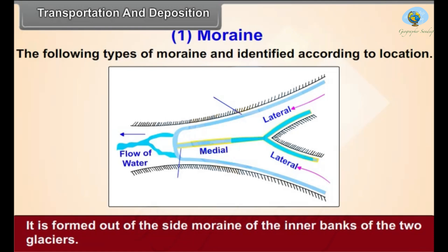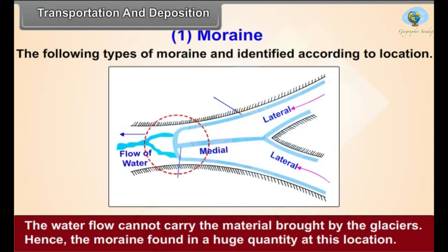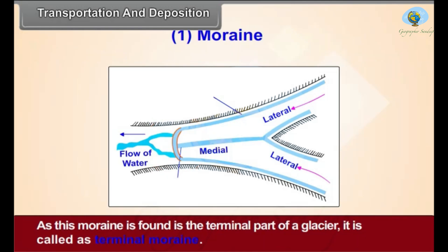Medial moraine is formed out of the side moraine of the inner banks of two glaciers. Terminal moraine is at the end where a glacier turns into a stream of water. The water flow cannot carry the material brought by the glaciers, hence moraine is found in huge quantities at this location. As this moraine is found at the terminal part of a glacier, it is called terminal moraine.